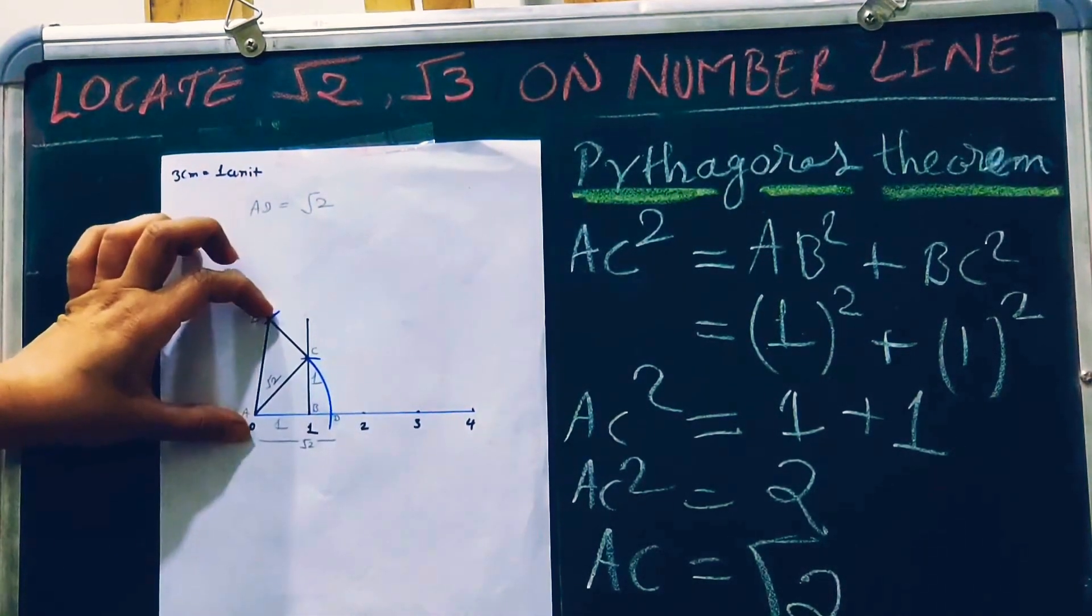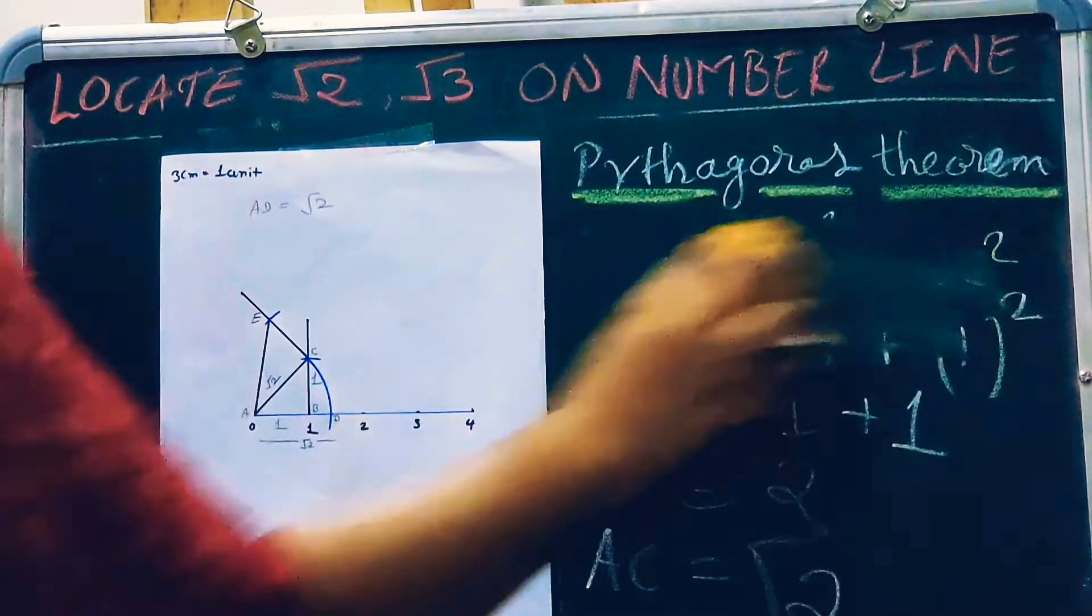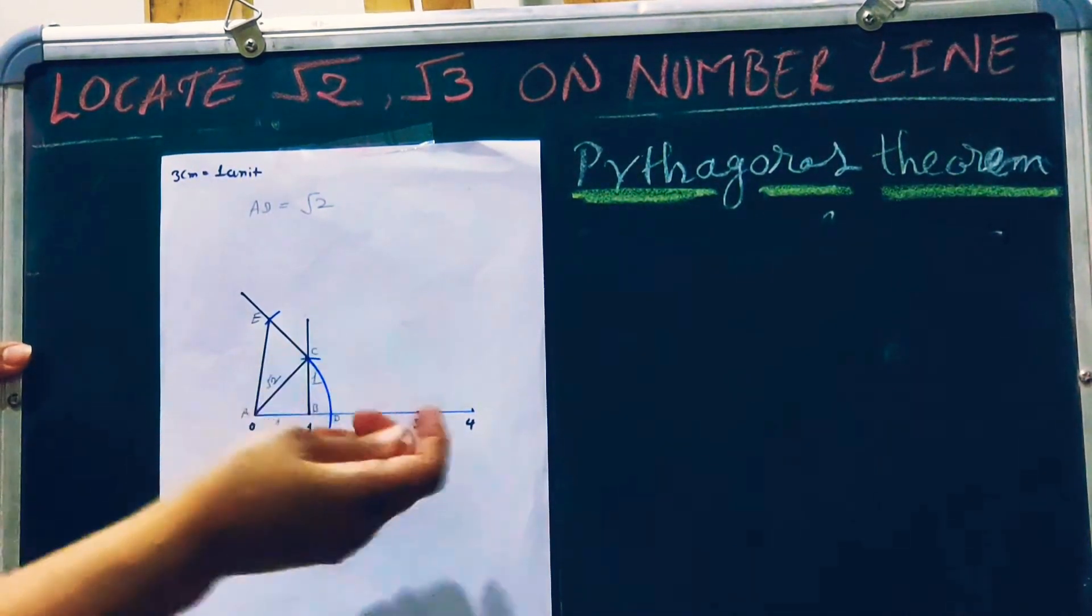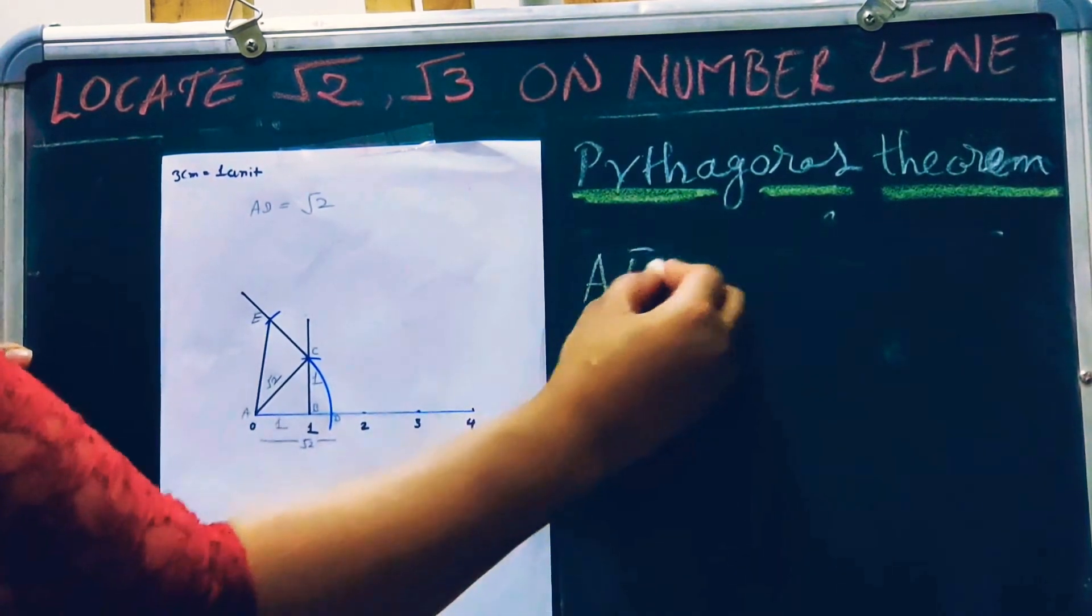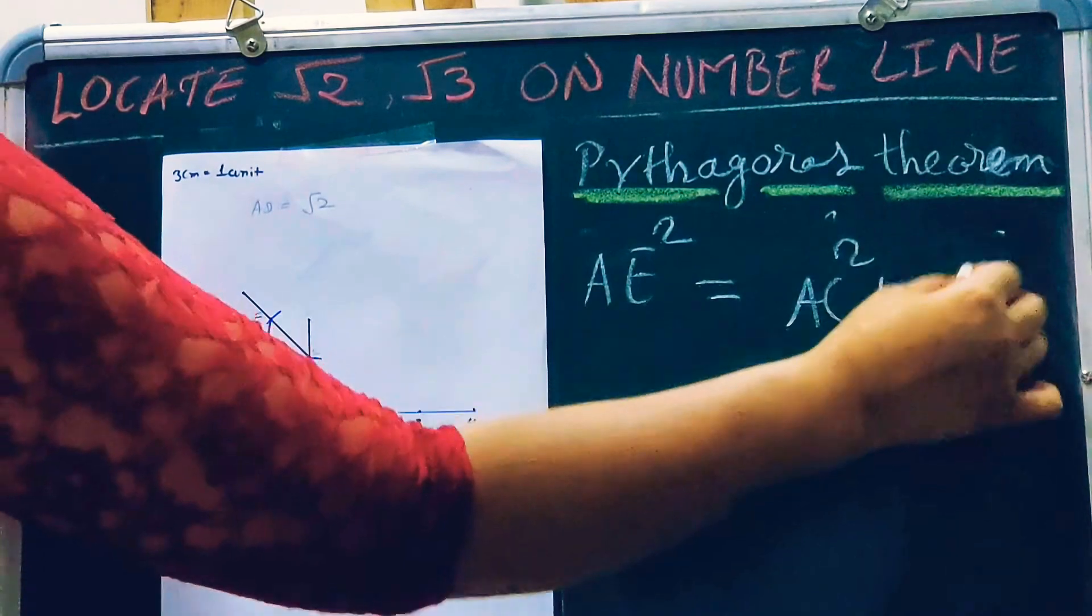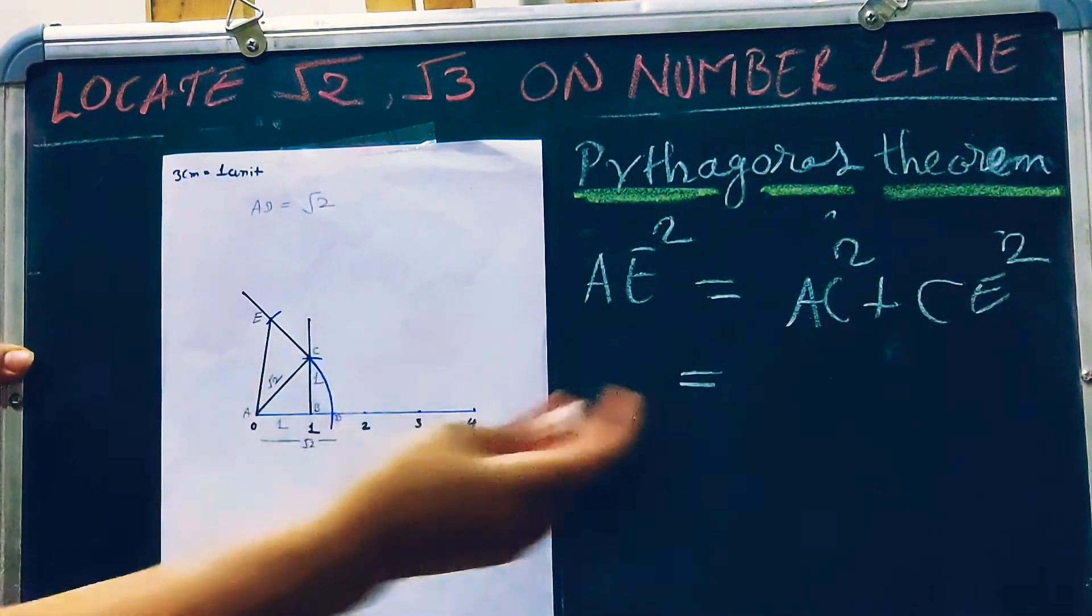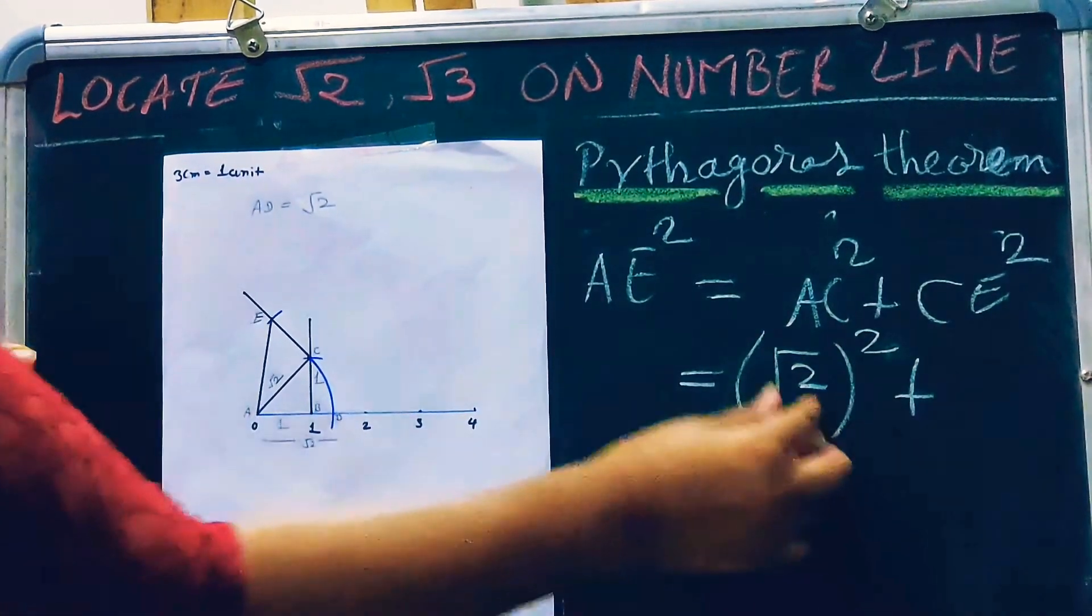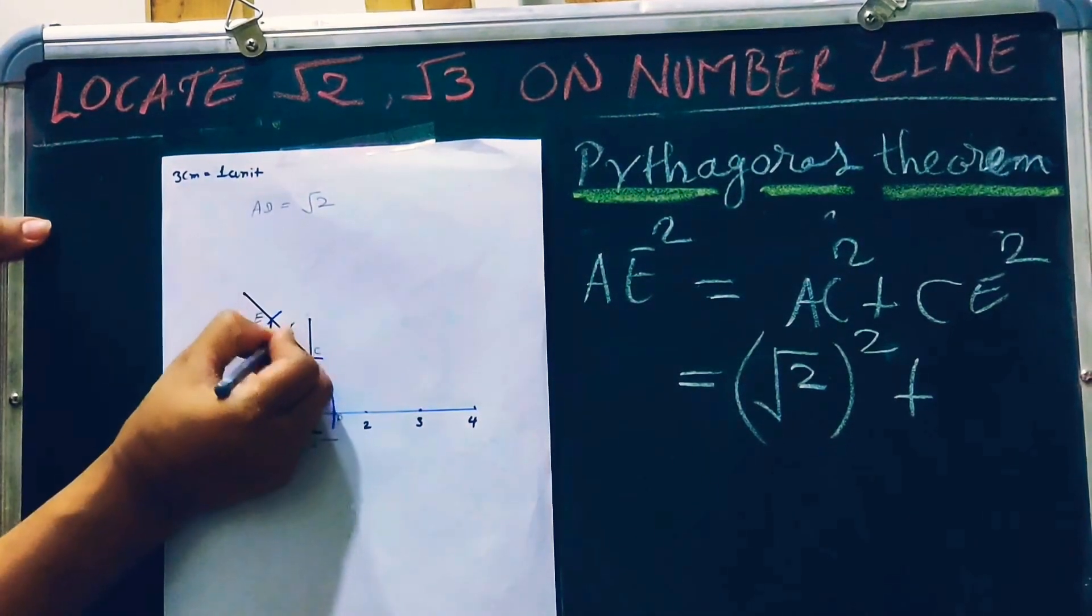Again, you can find out the length of AE from the Pythagorean theorem. For this right angle triangle, we have AE square is equal to AC square plus CE square. AC square is equal to root 2, so root 2 whole square. CE is equal to 1, so 1 whole square.